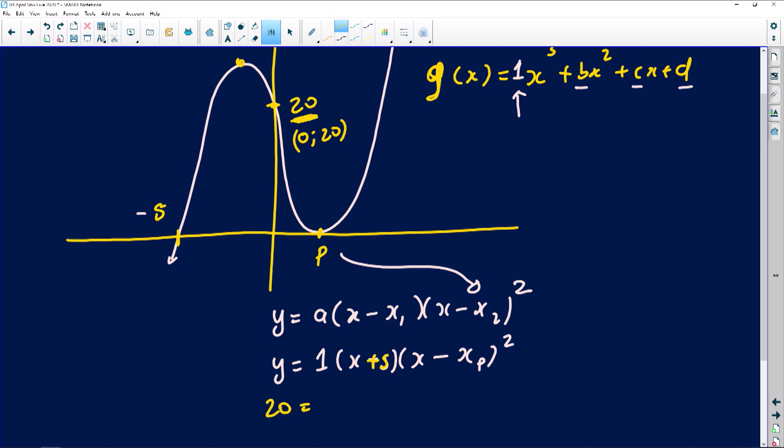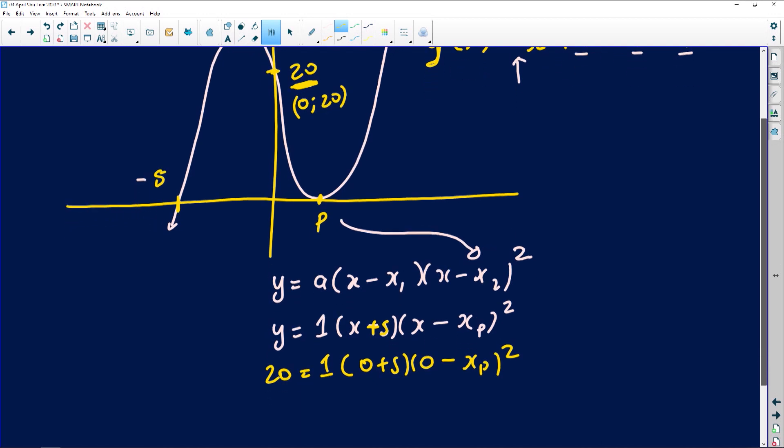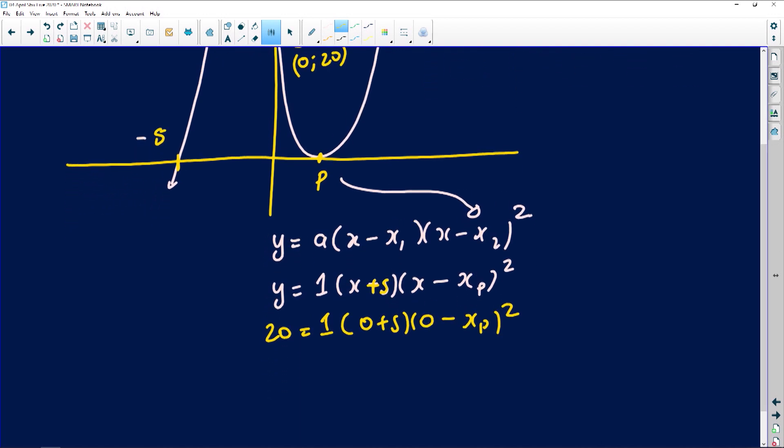Where I see y, I'm putting 20. I've got 1 into where I see x, I've got 0 plus 5 into 0 minus x of p squared, which from here you guys can be able to simplify and work out the solution, because you're going to have 20 is equal to 0 plus 5 is 5. You are sitting with 5 into x of p squared. What happened to the minus? Anything squared is always positive. You divide both sides by 5.